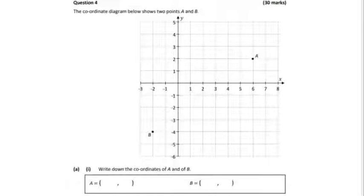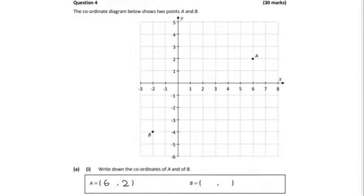Write down the coordinates of A and B. A is at (6, 2) for x and y. B is at minus 2 in the x direction and minus 4 in the y direction, so B is (−2, −4).